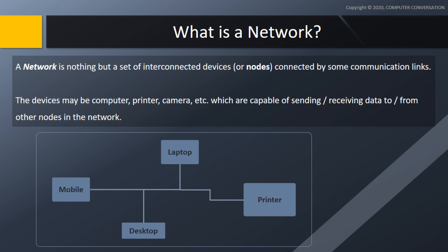So what does Computer Network mean? It is nothing but a set of interconnected devices, or nodes, which are connected by some communication medium or links. The devices may be computers, printers, cameras, etc., which are capable of sending or receiving data to or from other nodes in the network. Below is a diagrammatic representation of a network of a mobile, laptop, desktop, and a printer connected by some communication links.